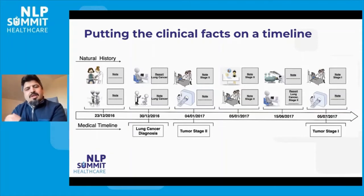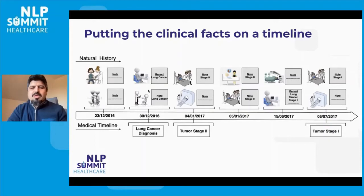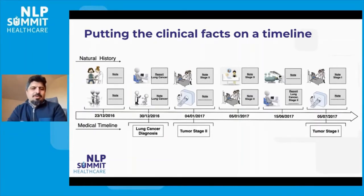We are trying to put the clinical facts on a timeline so that at a certain point in time, we can make some decisions based on previous events or facts. For example, a patient diagnosed with lung cancer in 2016 — we'd like to know if that status will change in one or three months, or whether the patient will be readmitted to the clinic in a certain period. If we can extract all this information from clinical notes produced over the last few years, we can build clinical facts on a timeline and use this in downstream machine learning algorithms.